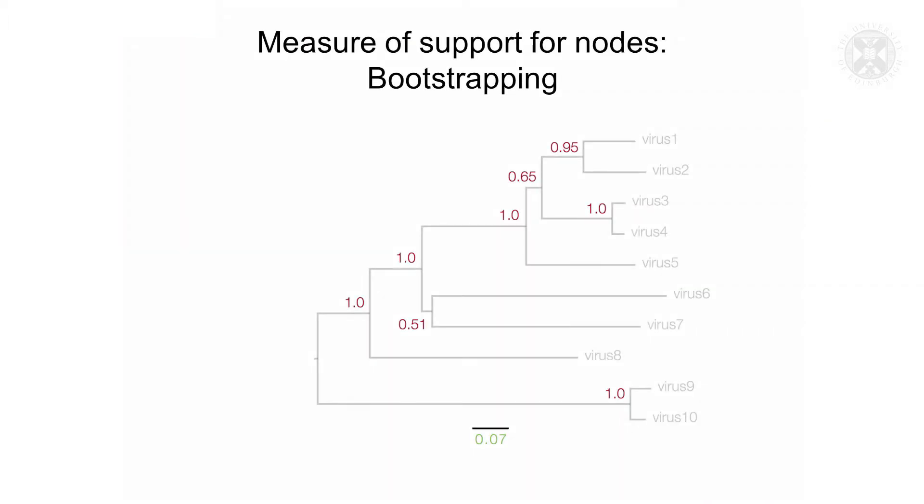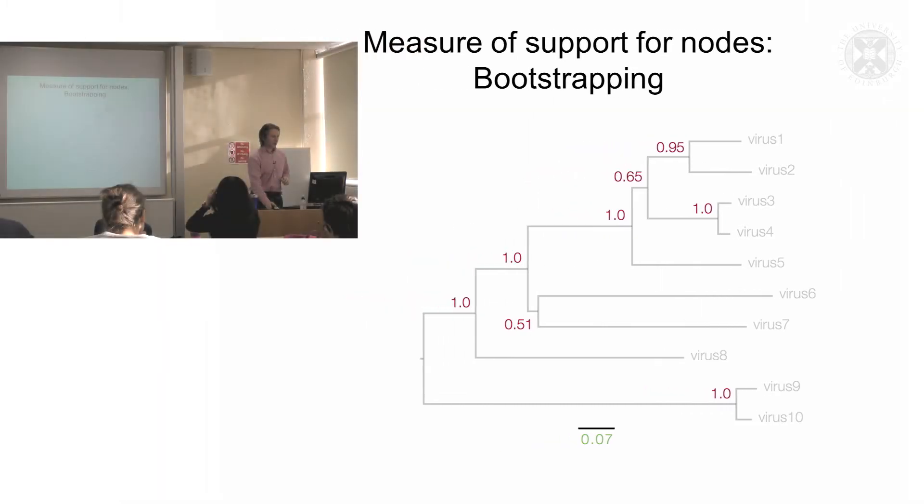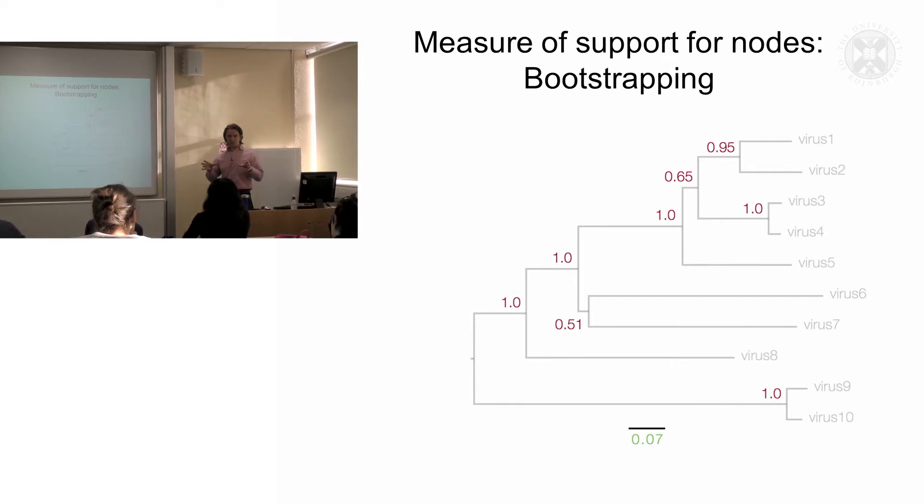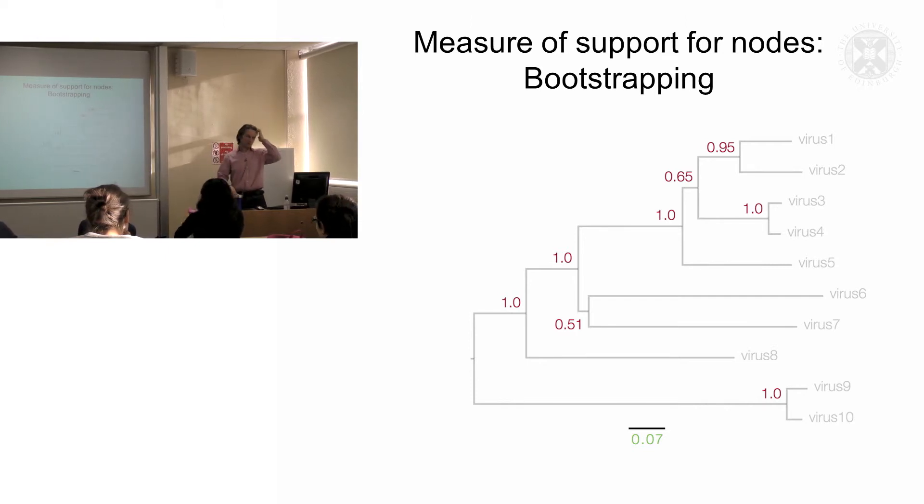The other thing that's important to have is a sense of the level of statistical confidence that we have in the shape of the tree and particularly the positioning of the nodes which contributes of course to the shape or topology of the tree. This can be done by a number of ways.